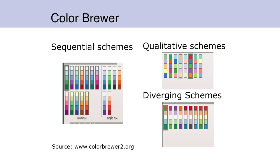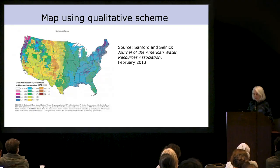And diverging: you have a neutral color in the middle going out in two directions. For example, with the Likert scale, you might have no opinion as neutral, and then agreement going out in one color and disagreement going out in the other. It's important to use the right color scheme.